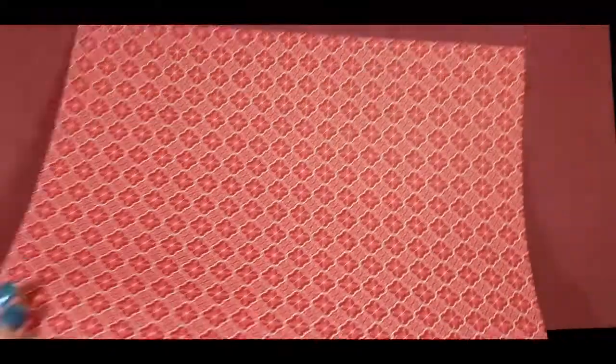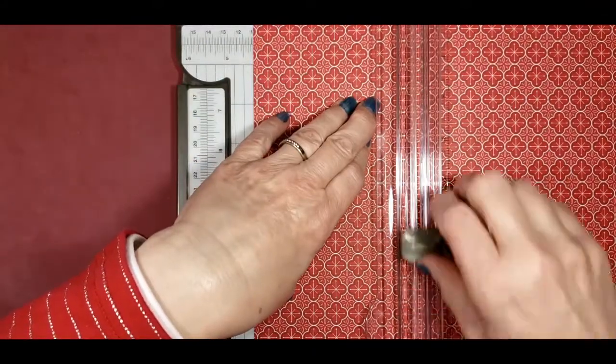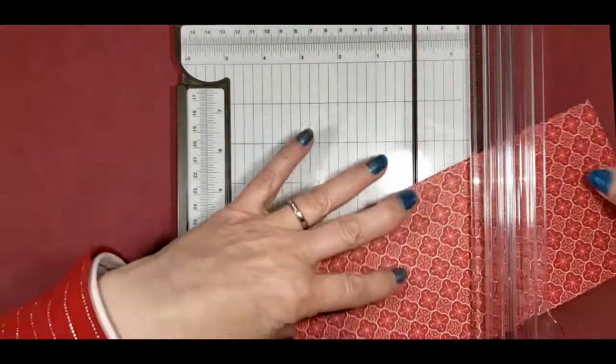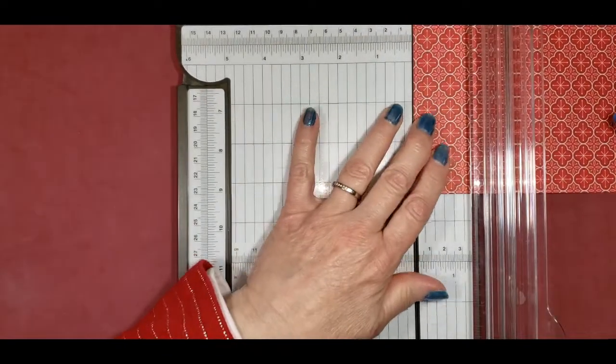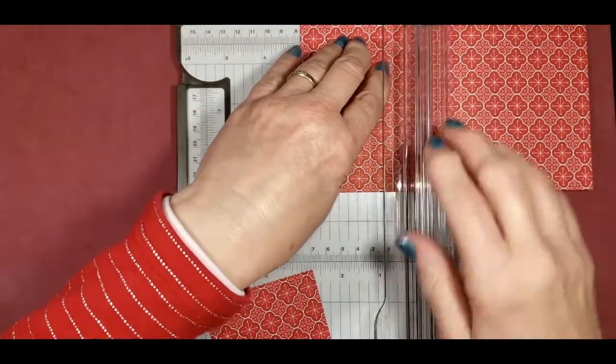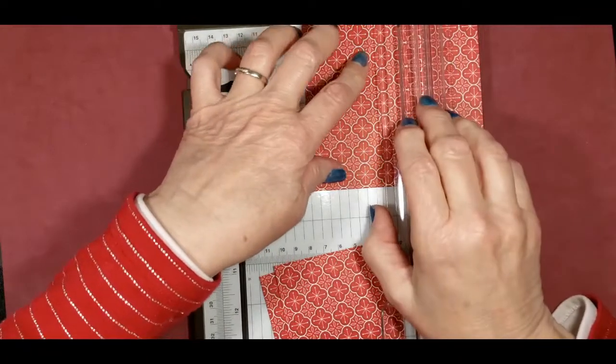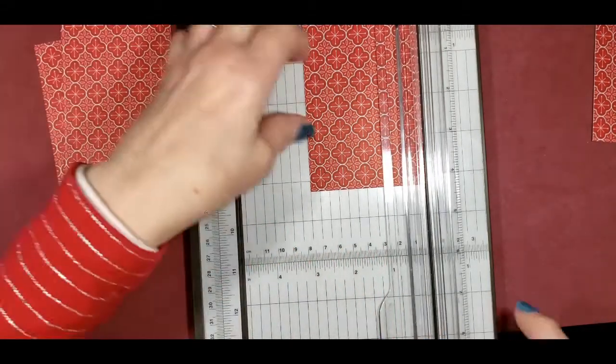We're going to make another design using another design of the Heartwarming Hugs Designer Series Paper. When you're cutting the paper, you want to cut it at four and a quarter by three inches. So I'm going to take this 12 by 12 inch piece of Designer Series Paper and cut it at four and a quarter. Then we'll cut it at three inches. So we'll get four cards out of this portion of the Designer Series Paper.